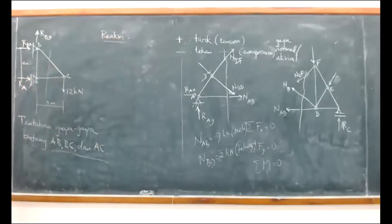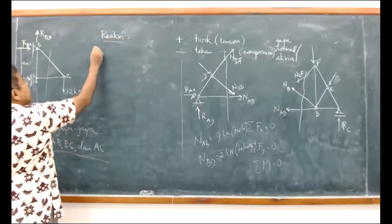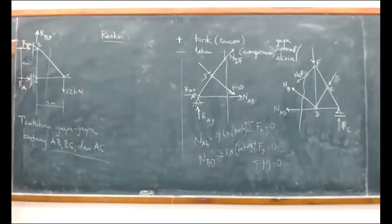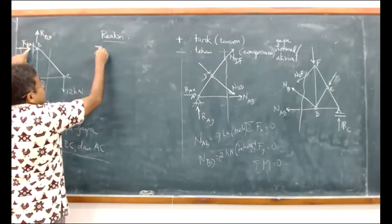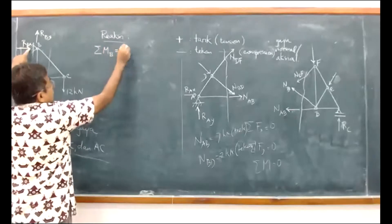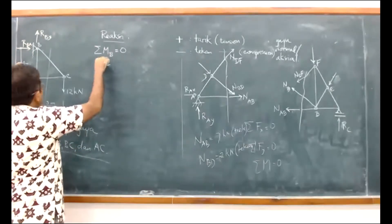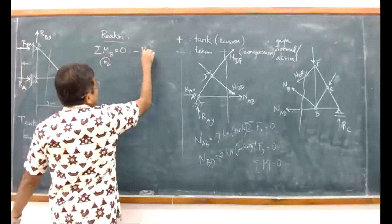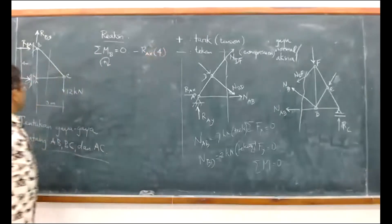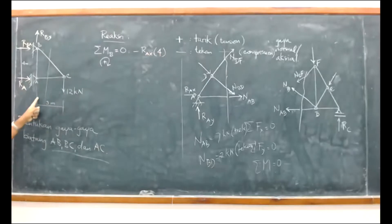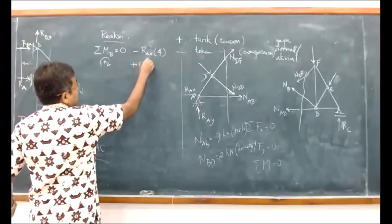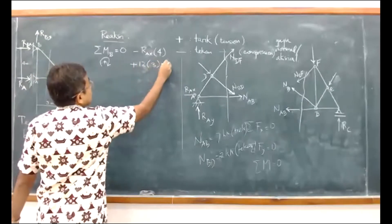Jadi reaksi dulu. Reaksinya ada RA, RBX, dan RBY. Kita ambil momen ke titik B: Sigma MB sama dengan 0. Kalau momen ke B sama dengan 0, RBX dan RBY tidak memberikan momen. RA ada momennya dengan lengan momen 4. Berarti minus RA kali 4, kemudian dari sini ada gaya 12 dengan lengan 3, tambah 12 kali 3 sama dengan 0.